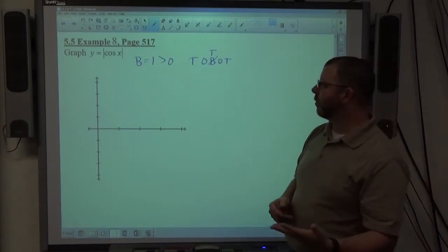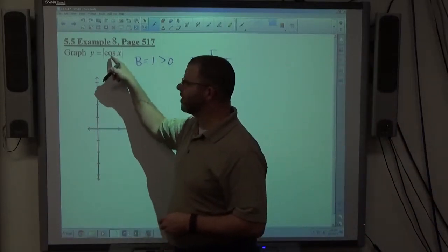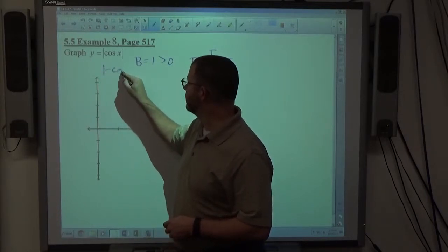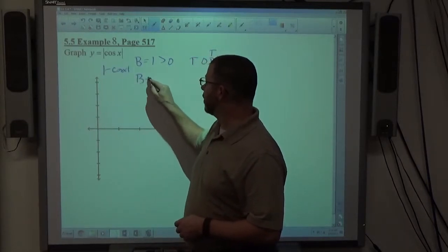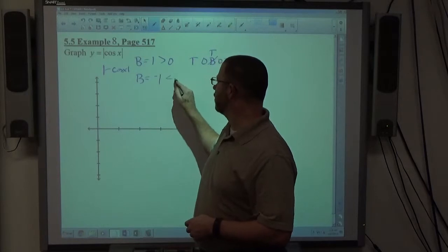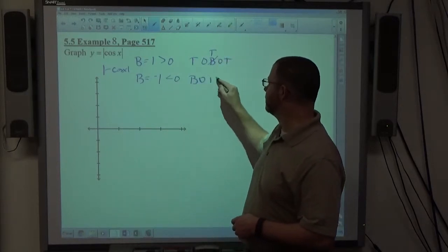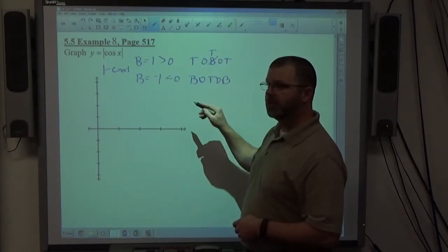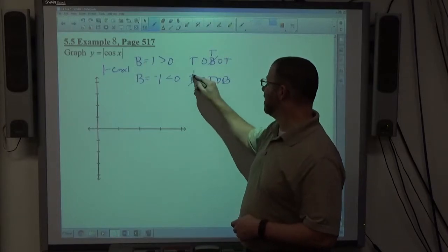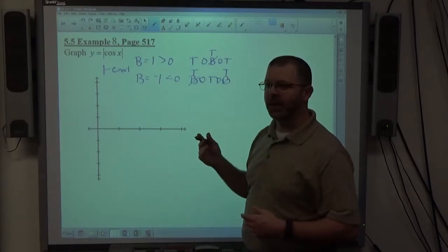That's all the absolute value bars are going to do to me. And if I had the other one, if it was negative cosine of X inside the absolute value bar, so if it looked like this, now B is equal to negative one, right? Which is less than zero, which gives me toe bot toe bot. Right? What does that do? The B's change to T's, right? And what do we get? Toe toe toe bot again. So it doesn't matter.